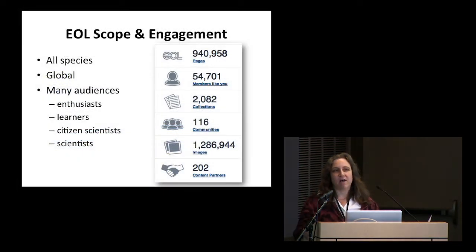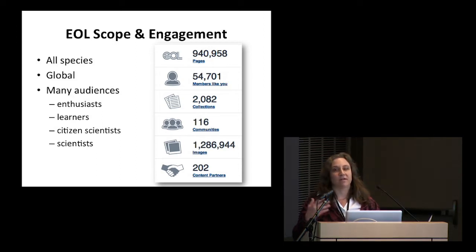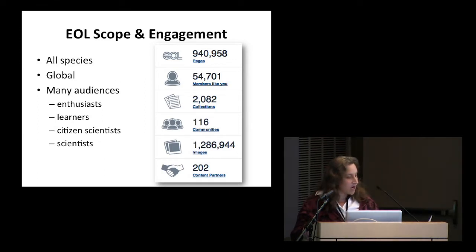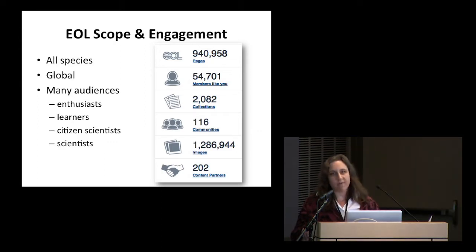We actually have several million pages about organisms around the world, and we've got four million data objects distributed across those pages, so that almost a million of them have at least some text or some multimedia. Up to now we've focused on our more general audiences, which are most of those 55,000 registered members. But my talk today will show that we are being used for science and that we have great potential to be used more for science.